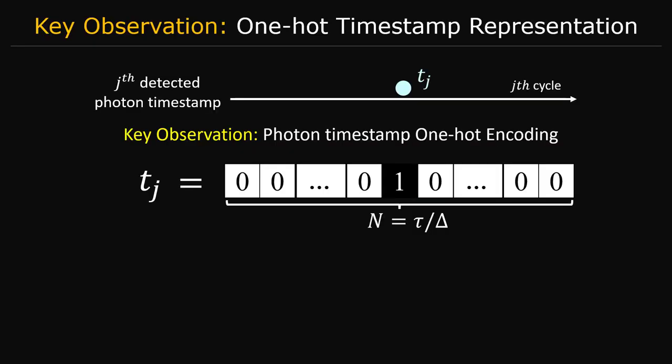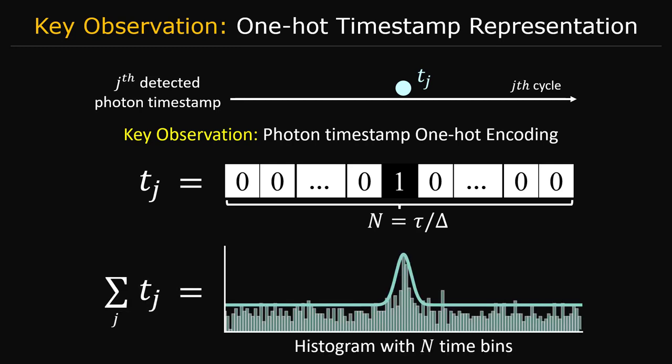To answer this question, let's revisit the histogram formation model. Consider a single timestamp. We can represent it as a one-hot encoding vector where all elements are zero, except for the element at an index that is proportional to the recorded timestamp value. A histogram can then be assembled by summing all the timestamps in their one-hot encoding vector representation.